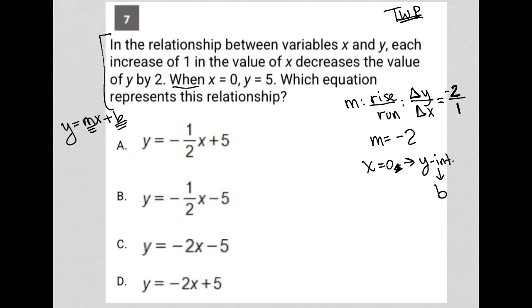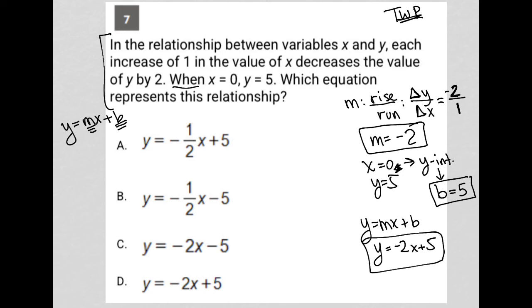Again, if when x equals 0, y equals 5, that is telling us that b is equal to 5. So now I have a b value and I have an m value, and therefore my y equals mx plus b is just y equals negative 2x plus 5. Put it all together, and our answer here is choice D.